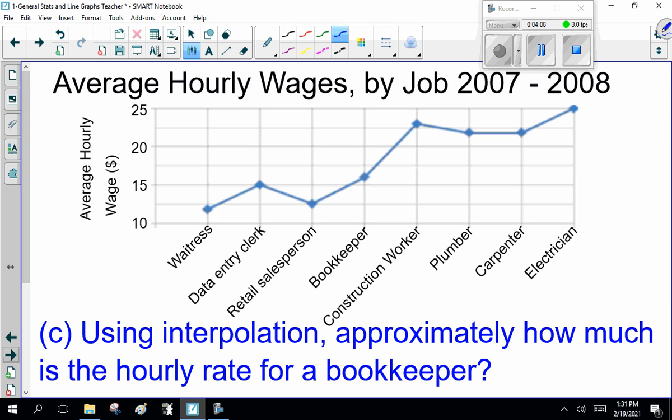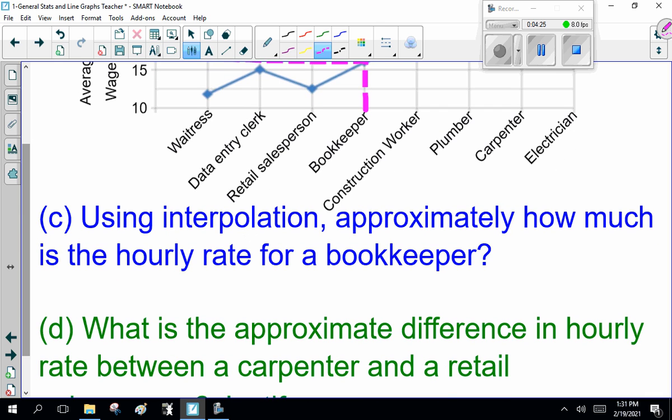Now, next question. Using interpolation, reading between points, approximately how much is the hourly rate for a bookkeeper? Well, the bookkeeper, I don't know, that is about 16, 16.50 an hour? I'd say, I'm going to say 16 and a half-ish per hour.